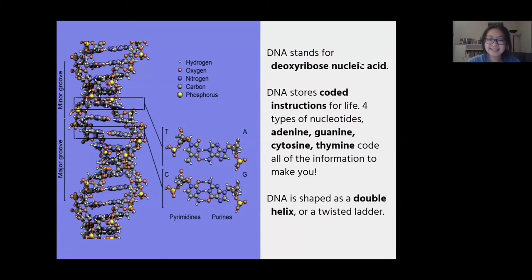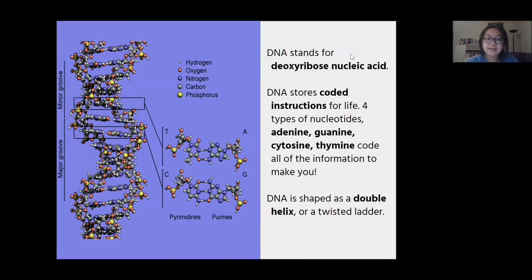Let's look at DNA. DNA stands for deoxyribonucleic acid. DNA is the genetic code for all life forms. The four types of nucleotides — adenine, guanine, cytosine, and thymine — code for all the information to make you. It is shaped as a double helix, or a twisted ladder, as shown in the picture right here. How cool!